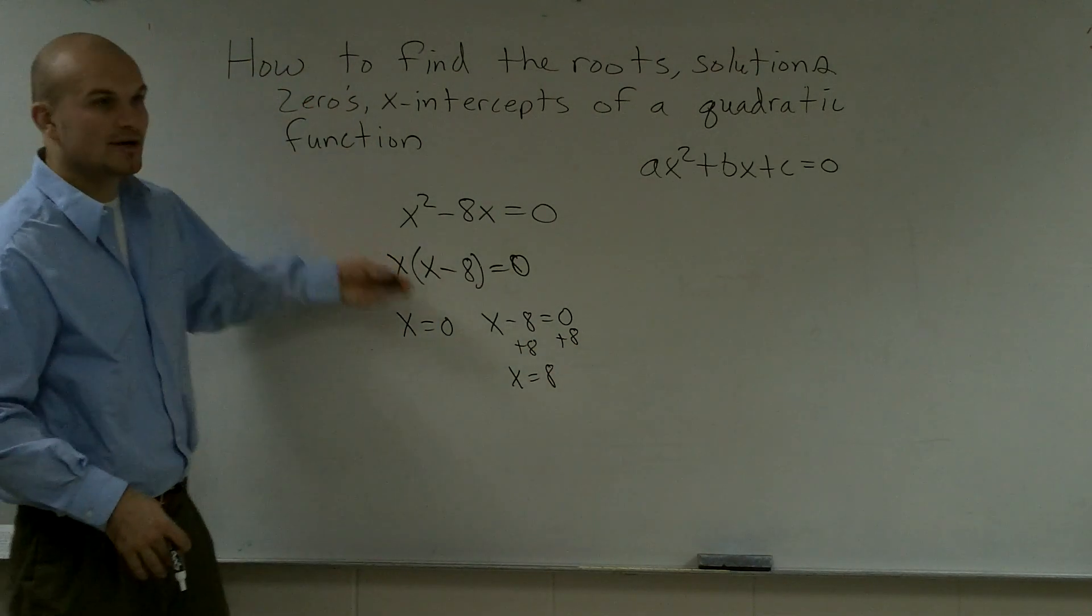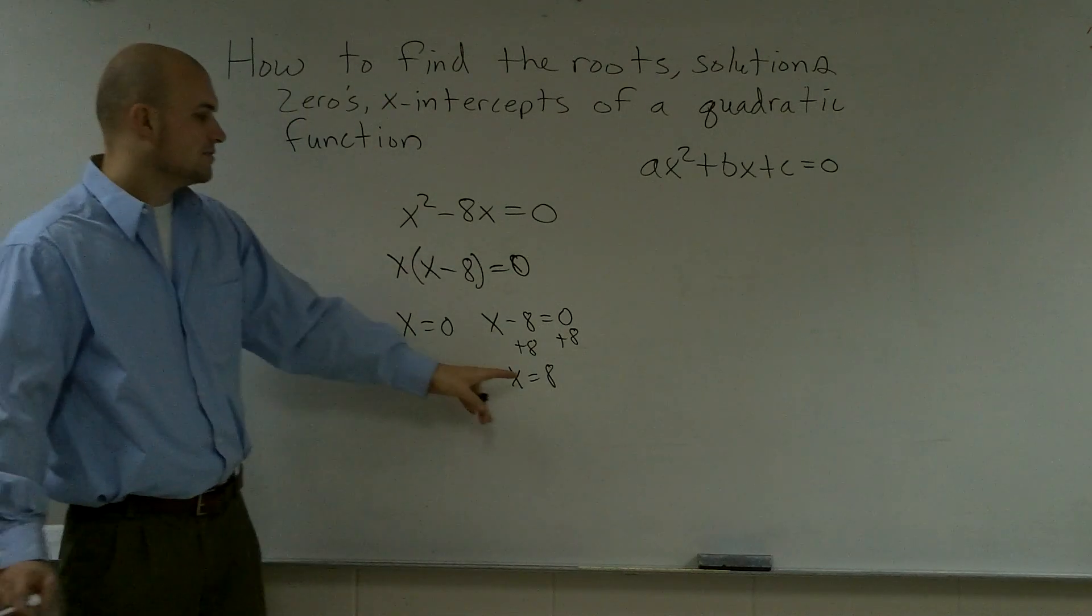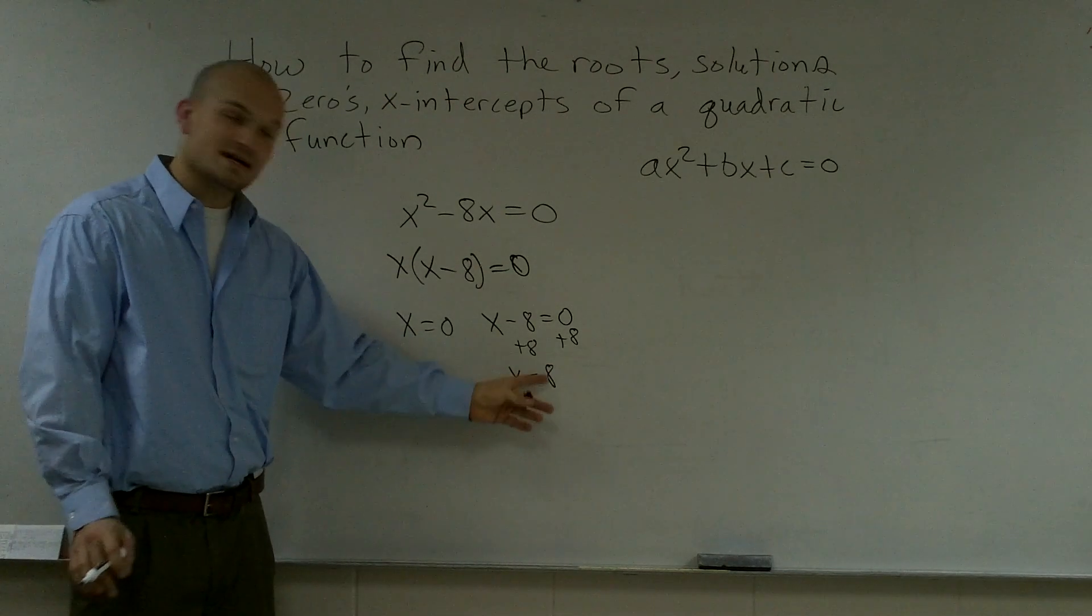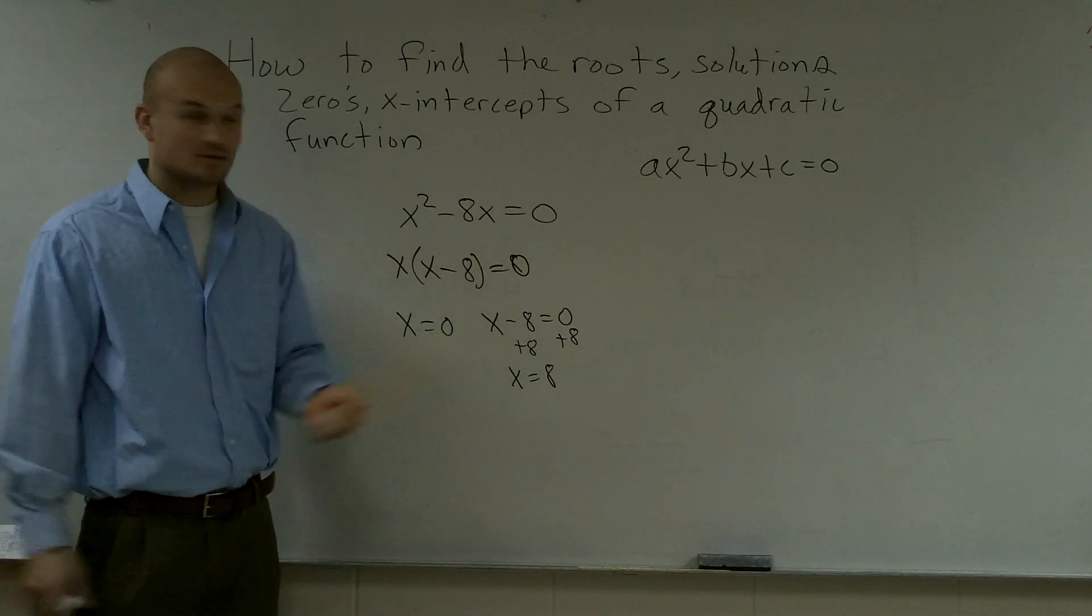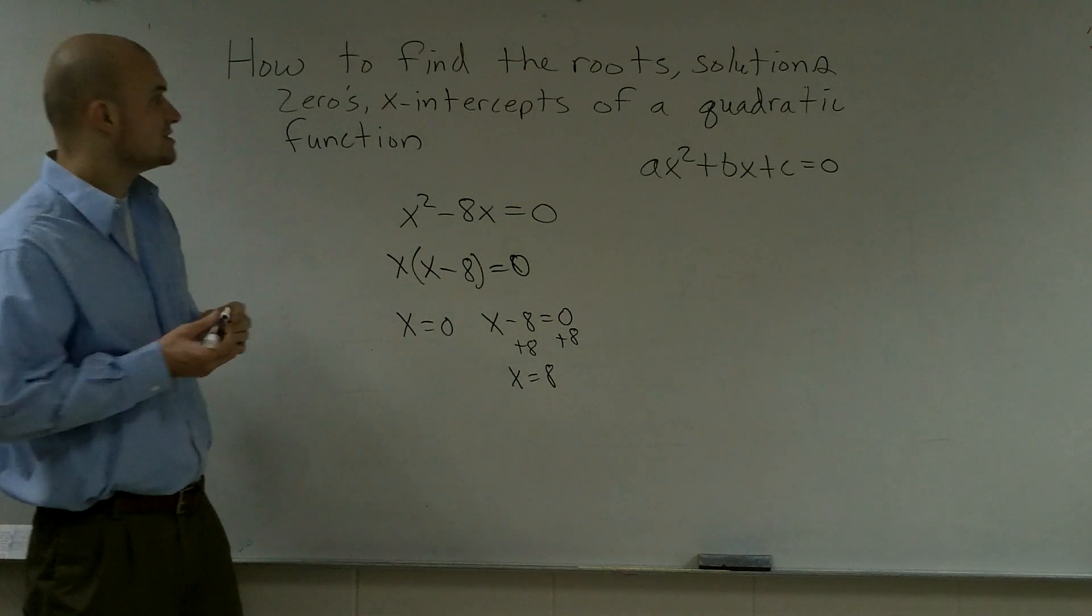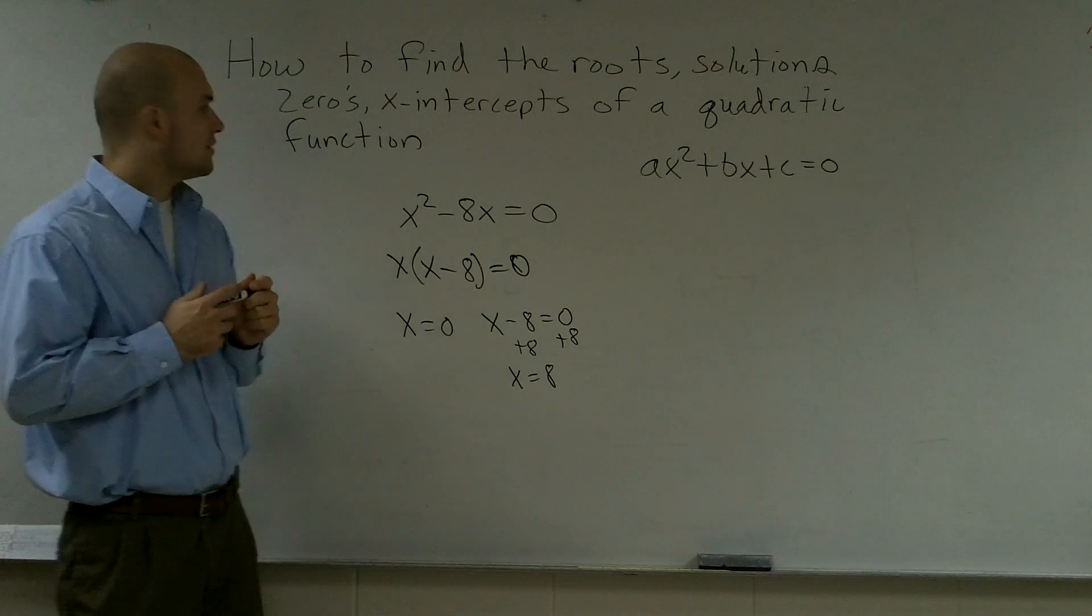So when talking about your answers, if you were to graph this, this graph would cross at when x equals 8, and the graph would also cross when x equals 0. So that's how you find the root solutions, zeroes, x-intercepts of a quadratic function.